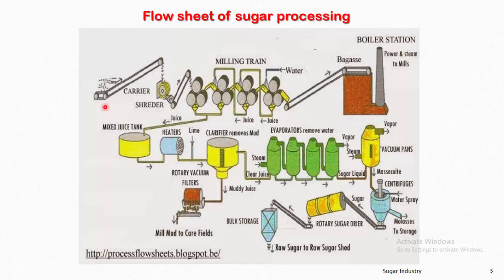Next is the flow sheet of sugar processing. The flow sheet is a schematic representation of how sugar is manufactured from sugar cane at the industry level. Observing the flow sheet with the pointer: the first step is the carrier and shredder, where the sugar cane is cleaned, washed, and chopped into small pieces.